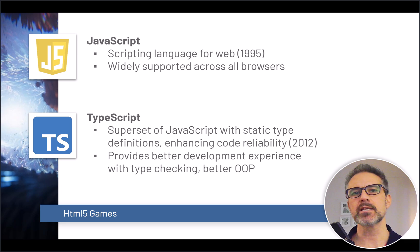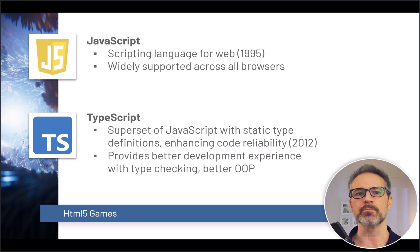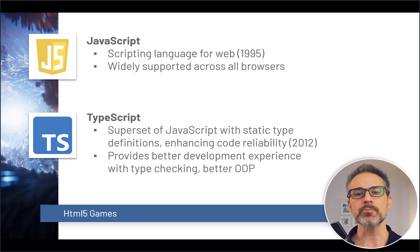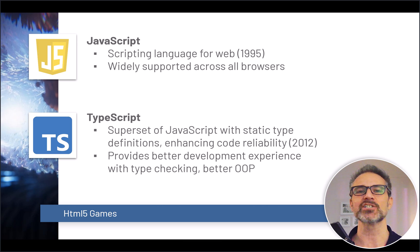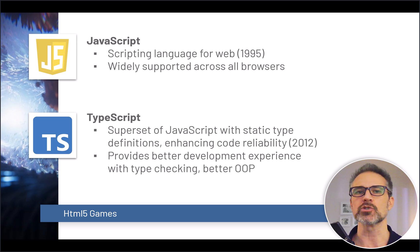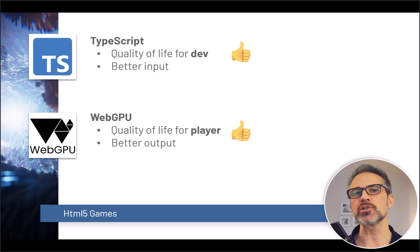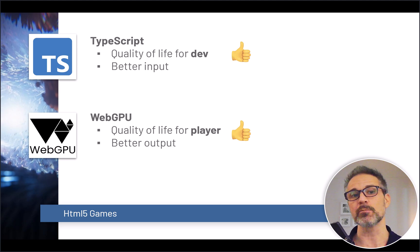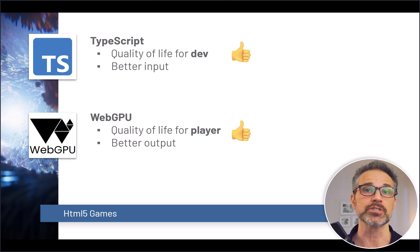Another bit of tech I wanted to talk about is that you're doing the majority of your programming in the HTML5 world with JavaScript. JavaScript has a second flavor called TypeScript. JavaScript has been around since the 90s and is widely supported across all web browsers. TypeScript is newer, coming out around 2012. It's a superset of JavaScript with tremendous improvements for quality of life, including static type definitions and a better experience around creating object-oriented programming. I've been particularly interested in HTML5 because of the maturity of TypeScript, which gives such a better quality of life as a developer, and also WebGPU, which is able to render much better stuff and increase quality of life for the player.